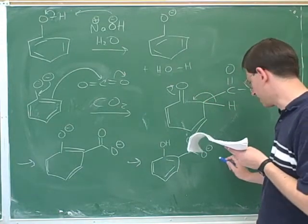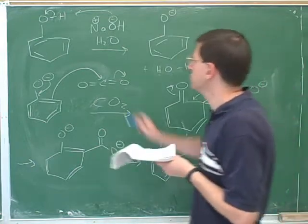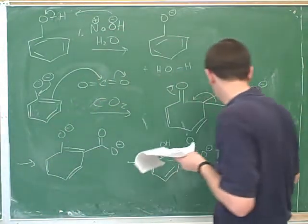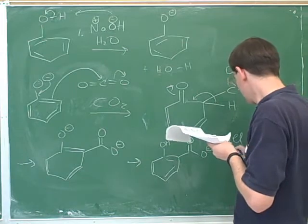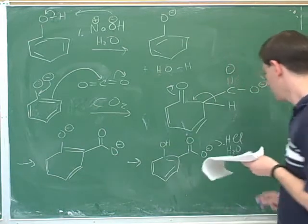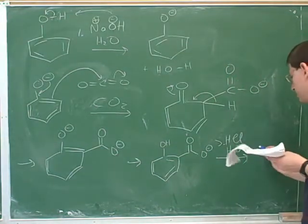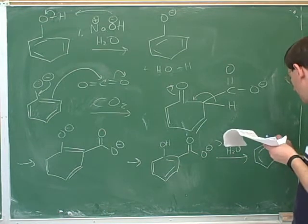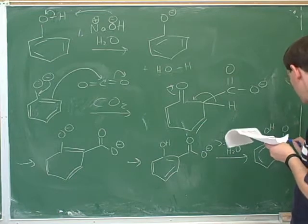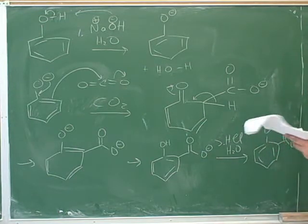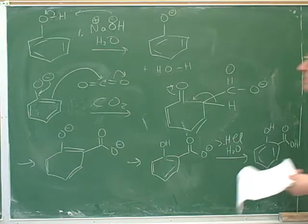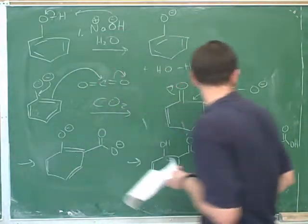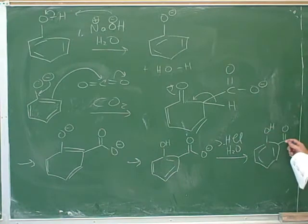This still will not be protonated under basic conditions. Let's say now that we do a second step where we add aqueous acid. Now we can protonate the carboxyl group. Here's the final product we were going towards all along. Notice that we started with the phenol and we actually ended up still with the phenol but now with this carboxyl group on.